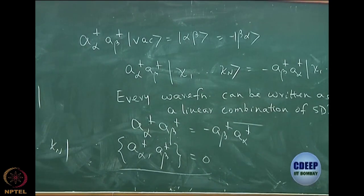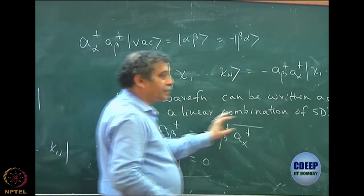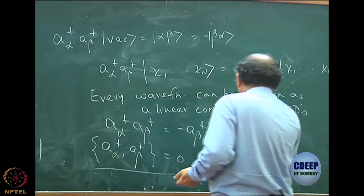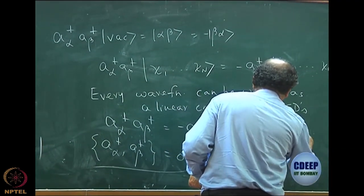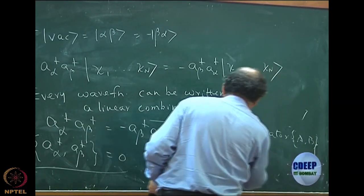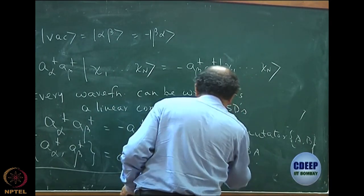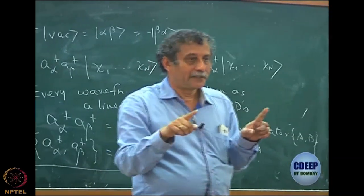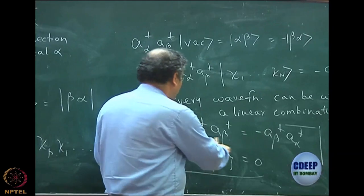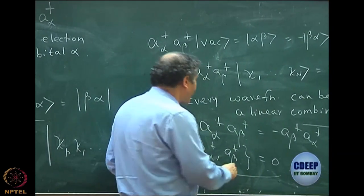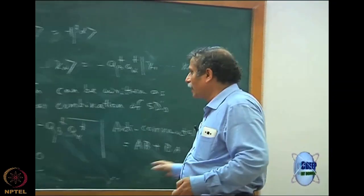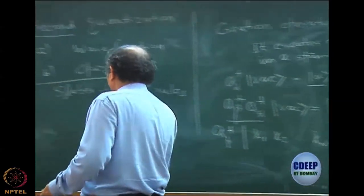This is called the anti-commutator. The anti-commutator of AB is defined as AB + BA, whereas the commutator [A,B] is AB − BA. The important point is that the anti-commutator {a†_α, a†_β} = 0. Now, let us assume beta is equal to alpha — then a†_α a†_α + a†_α a†_α = 0, which means the operator a†_α a†_α is a null operator.